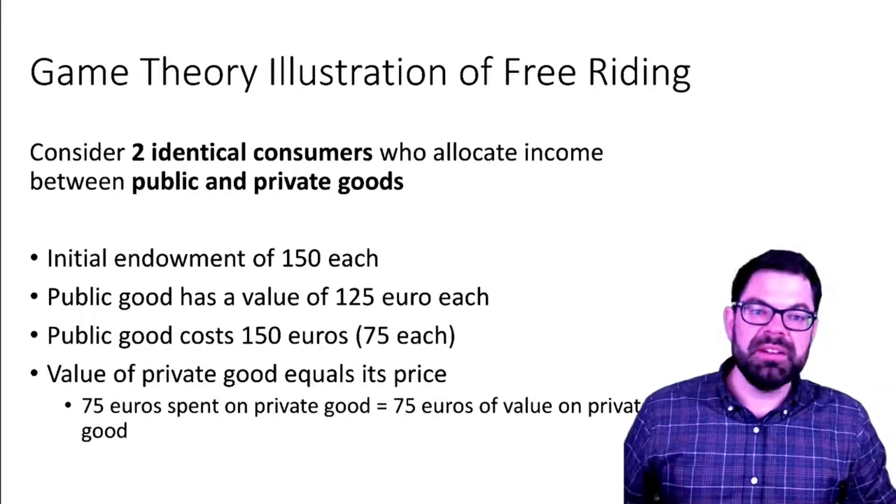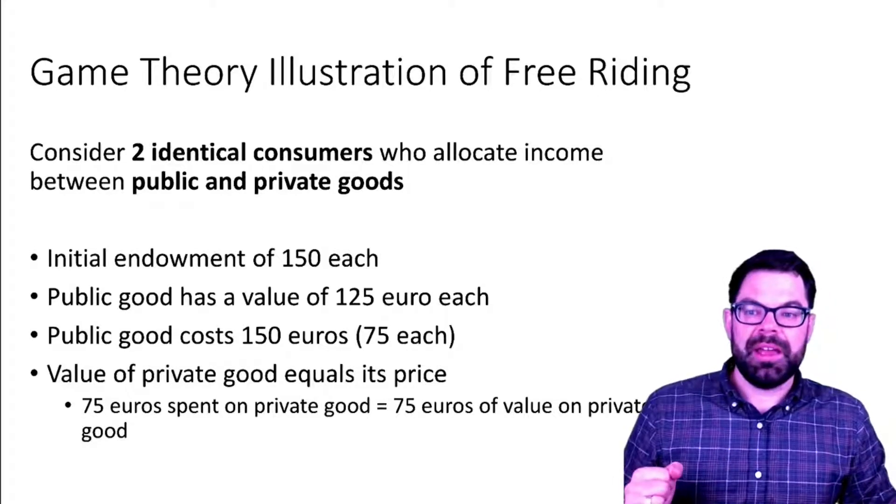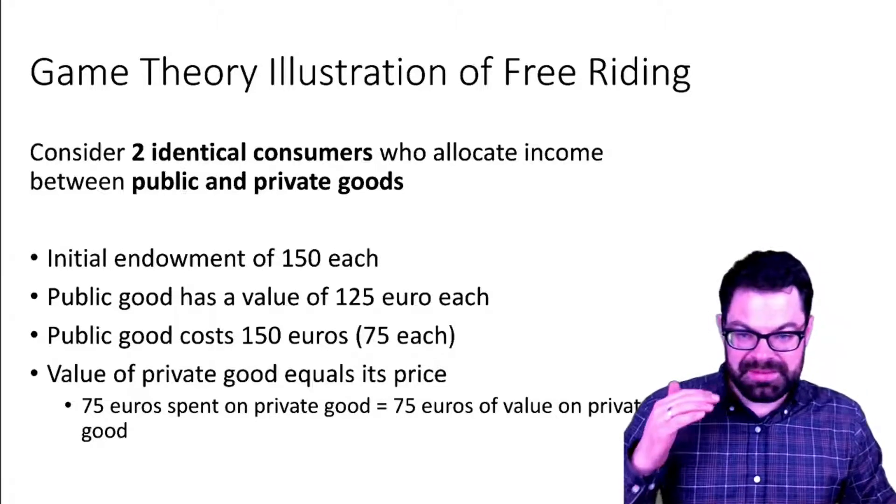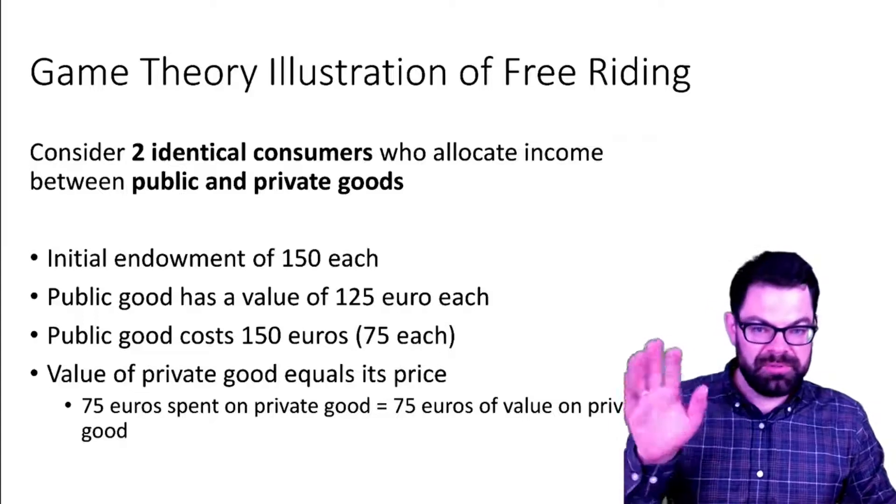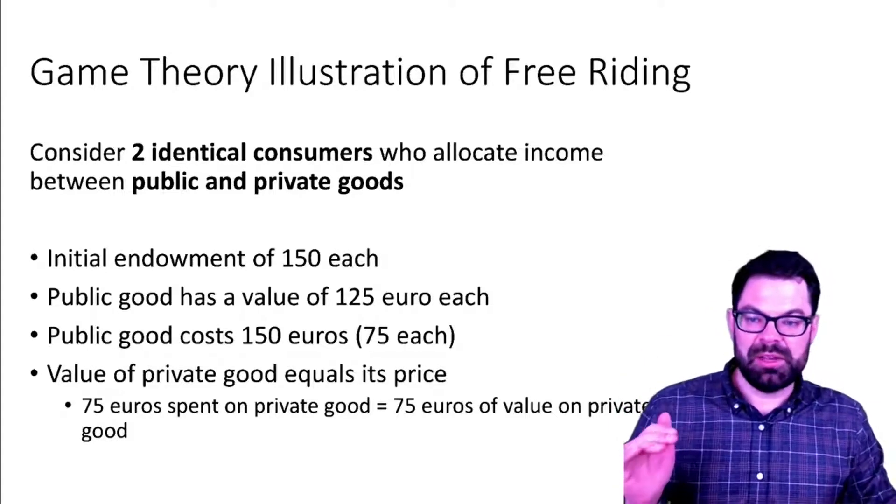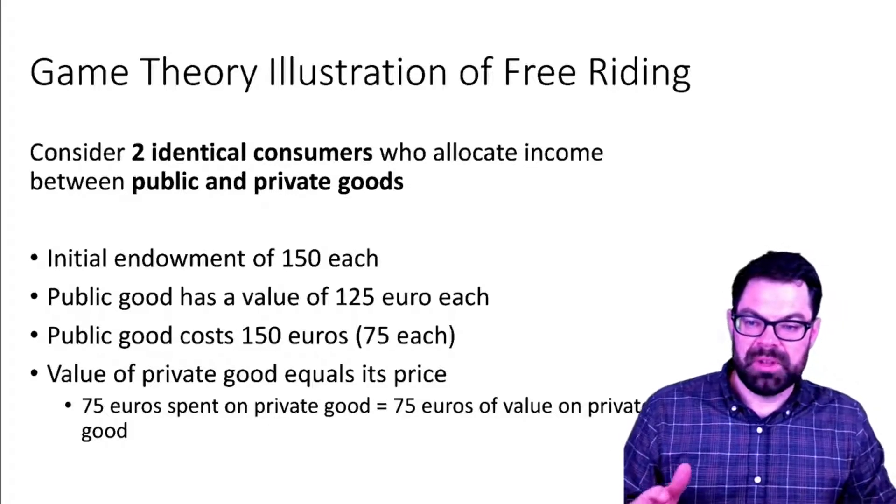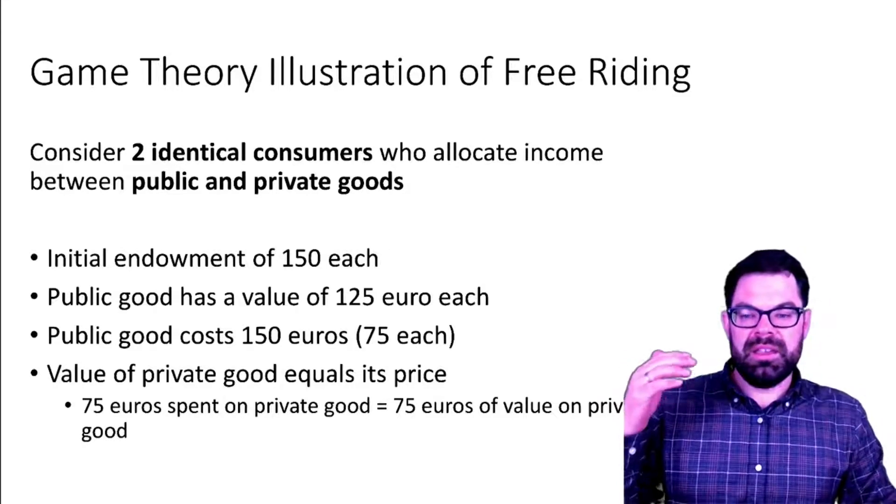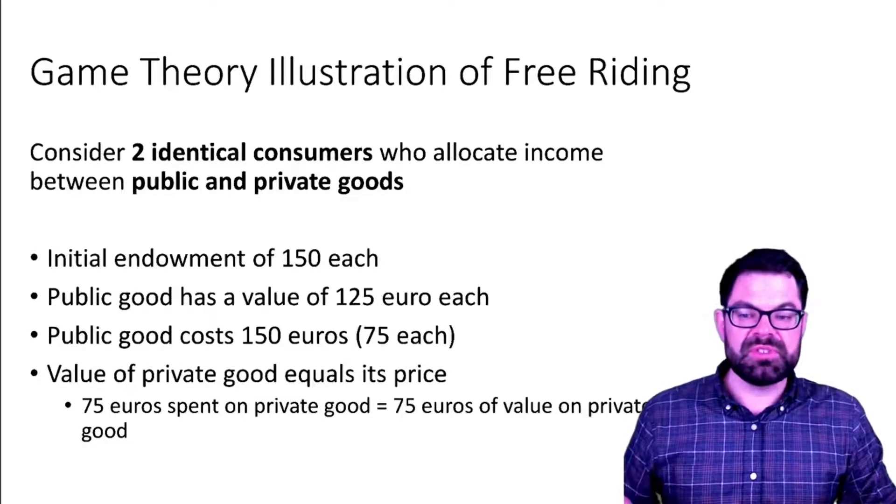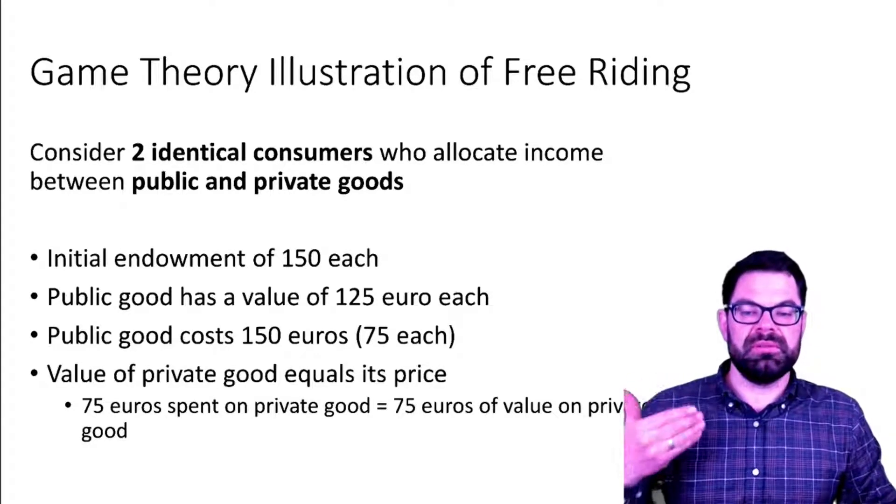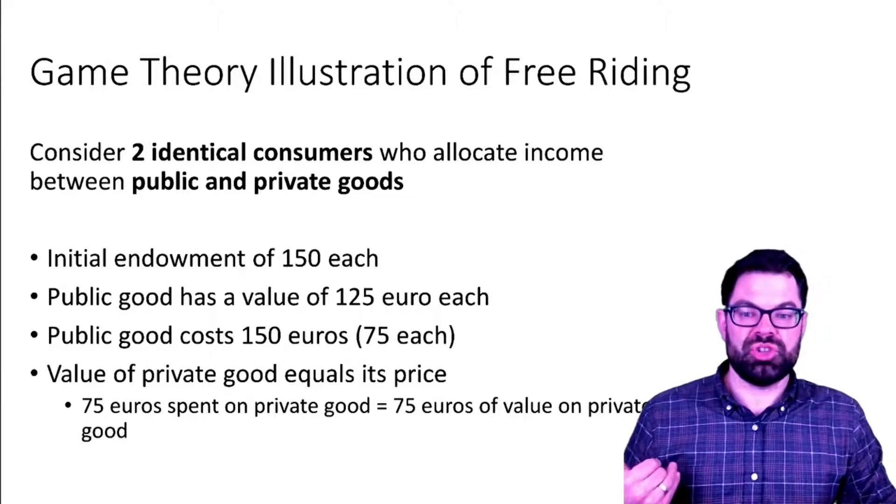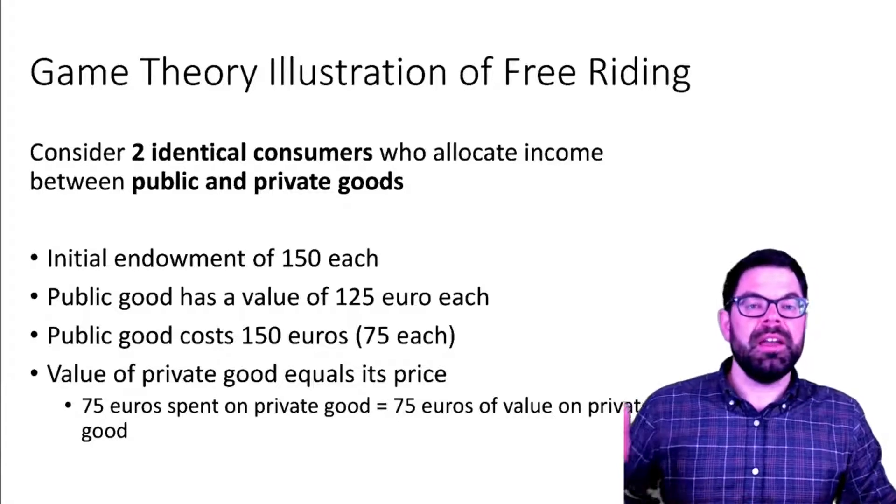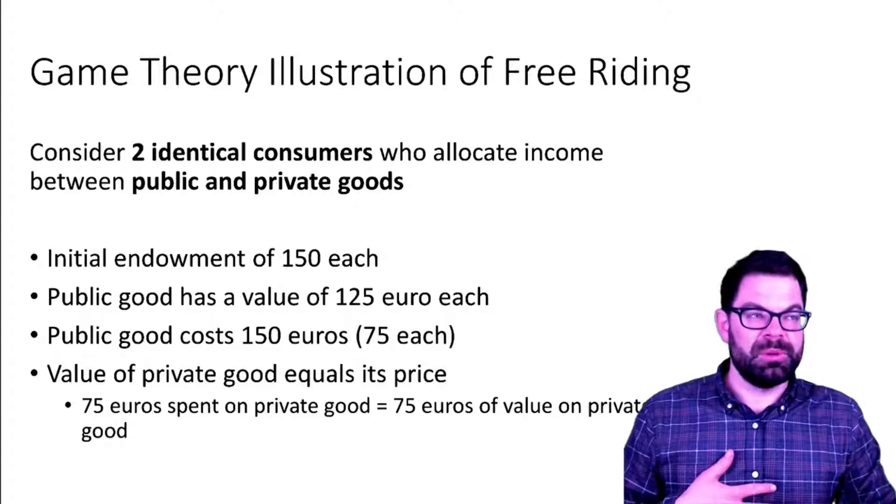We will start here with a very simple example based on game theory. Here we look at two identical consumers with identical preferences who can allocate their income between public and private goods. They each have an initial endowment of 150. If the public good gets produced that has a value of 125 for each.